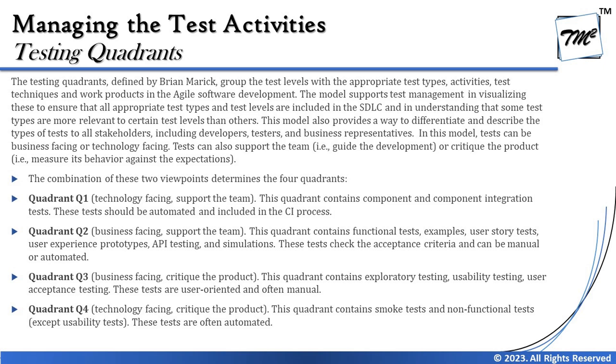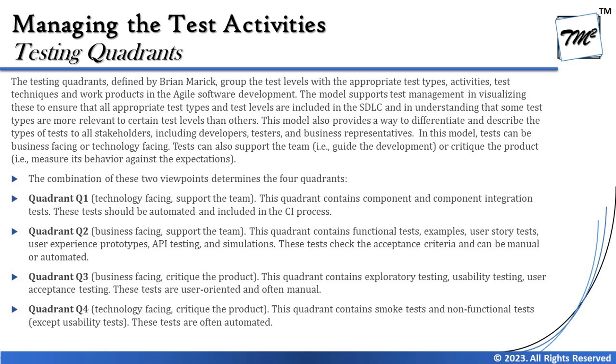Quadrant 3 is business-facing and critiques the product. It contains exploratory tests, usability testing, and user acceptance testing. These tests are user-oriented and generally manual in nature. Quadrant 4 is again technology-facing but critiques the product. It contains non-functional tests — except usability, which is already covered in Q3. Most non-functional testing is performed using automation tools, so these tests are often automated.